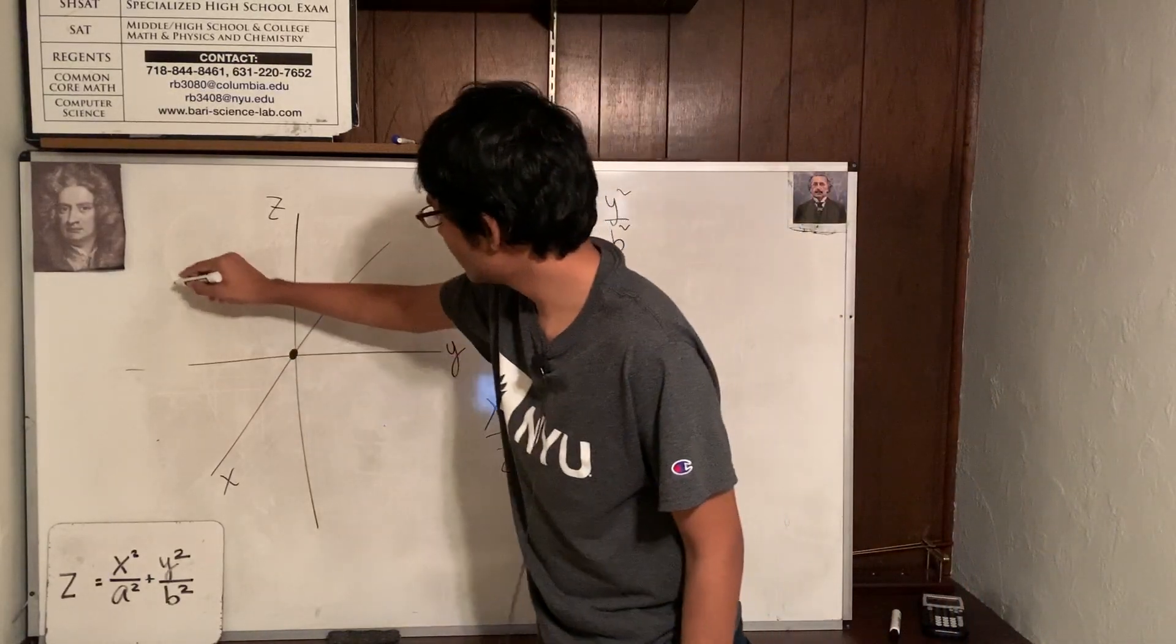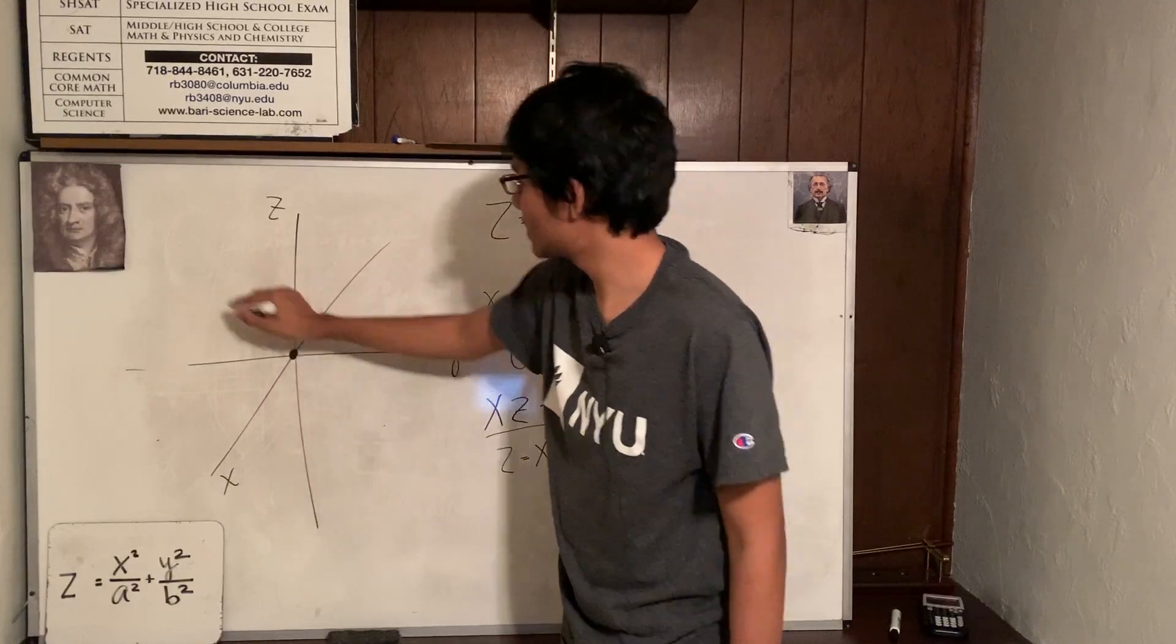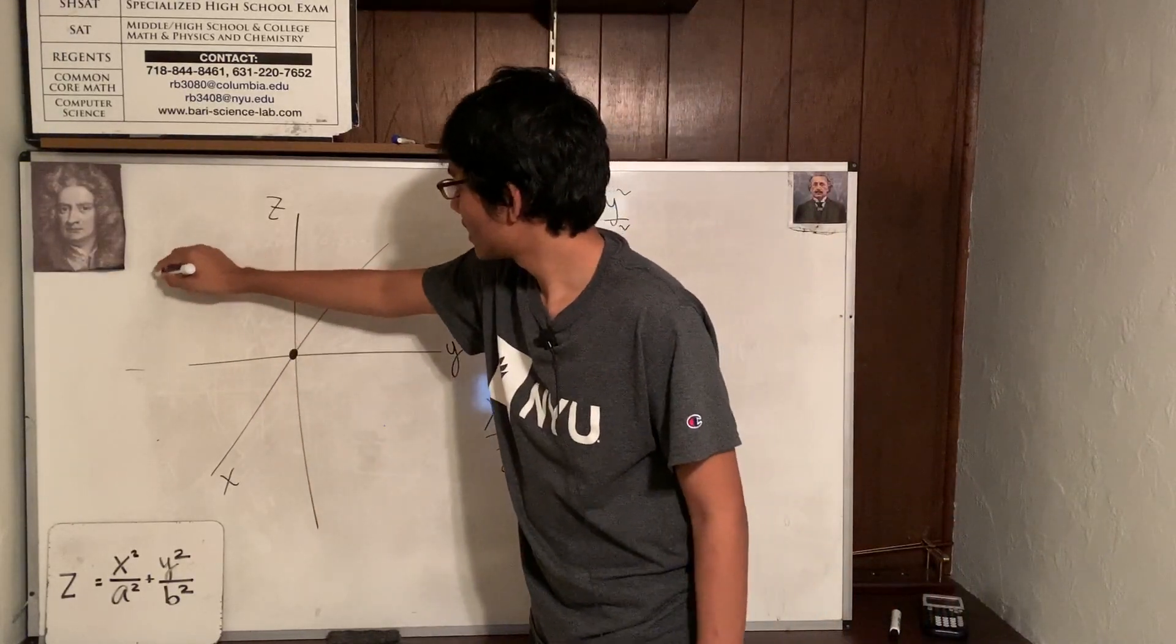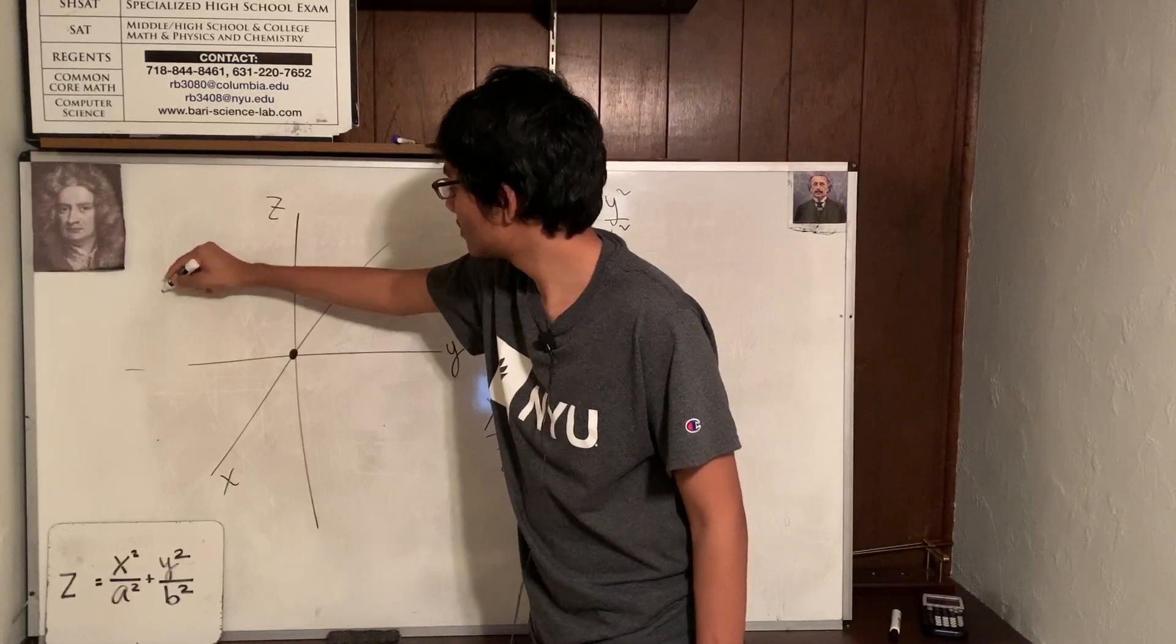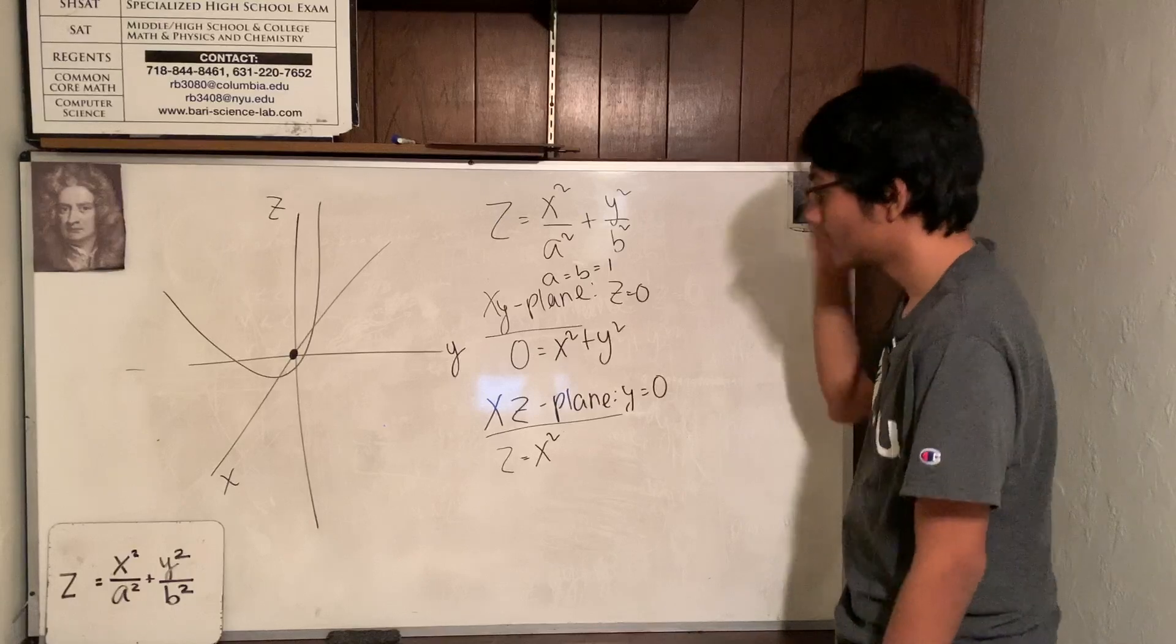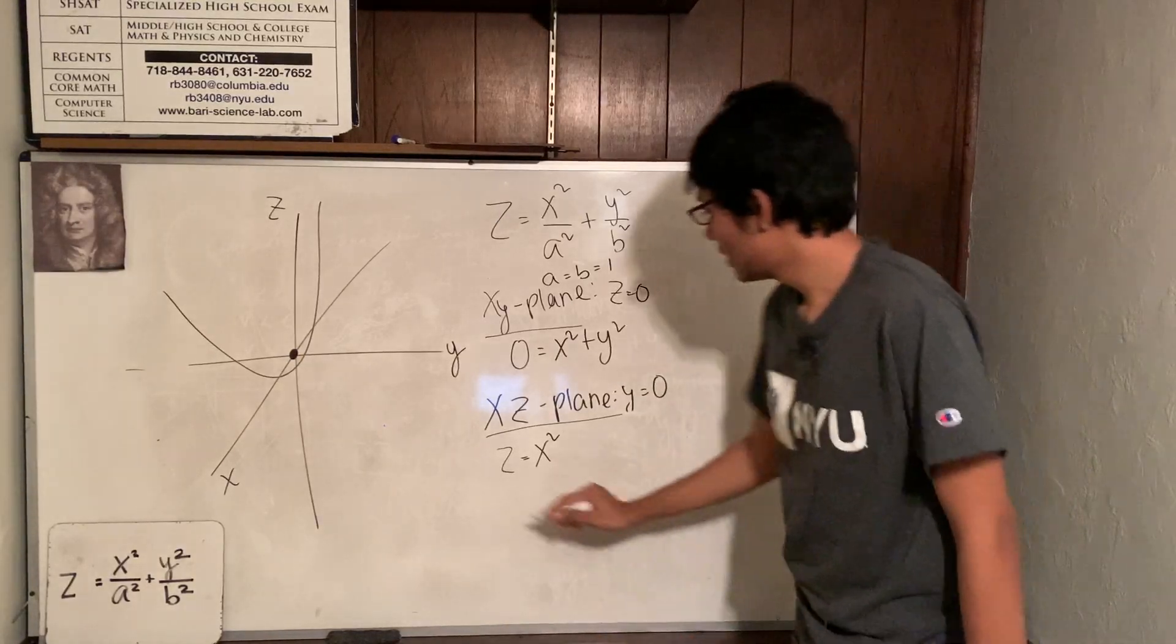So go to the xz plane and just sketch out a parabola. Where's the xz plane? There it is. Am I even able to do it? I think so. Right there. There's my parabola, or my attempt at a parabola.